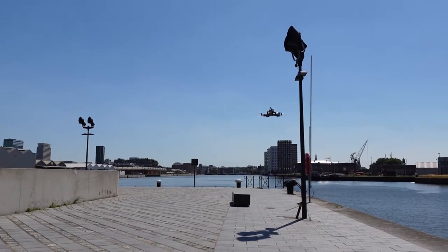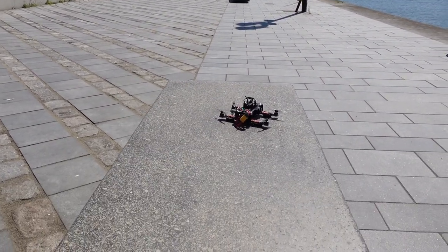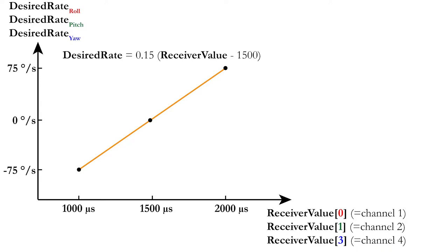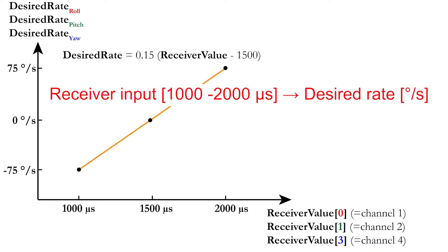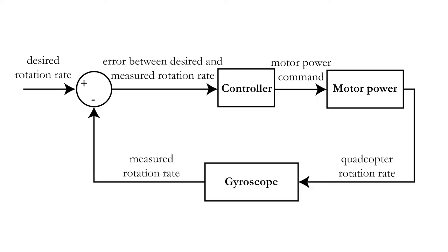These commands are generated depending on the commands you give yourself through the radio transmitter. In the previous video, you saw how to convert the receiver commands to a desired rotation rate in degrees per second. Now we need to make a conversion from the desired rotation rate to a motor input command for all four motors. This can be done with the help of a closed control loop. The closed control loop that you will use for the roll, pitch and yaw rotation rates is displayed on the screen.